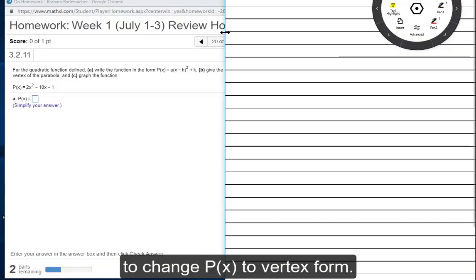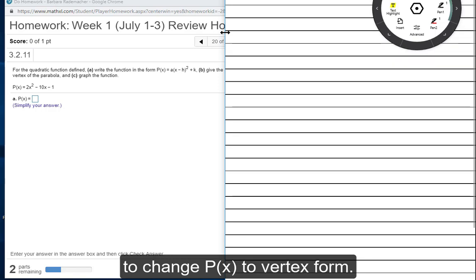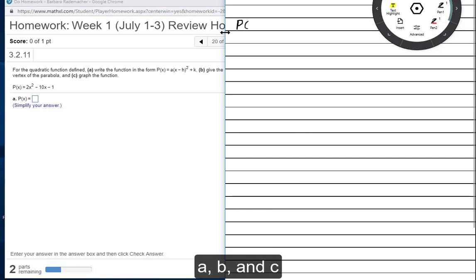We're being asked to change P of X to vertex form, so I will write P of X and A, B, and C, and then we'll be able to calculate H and K.